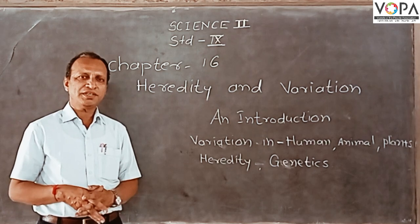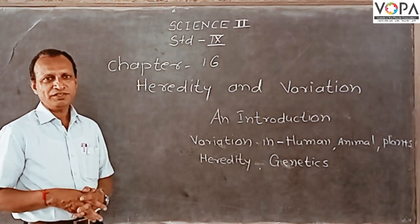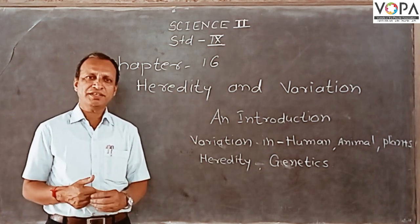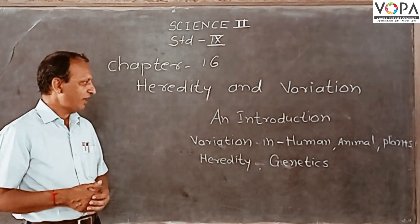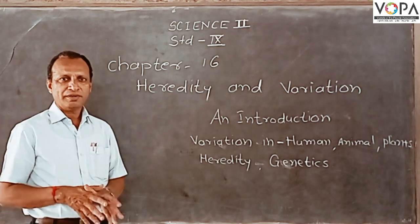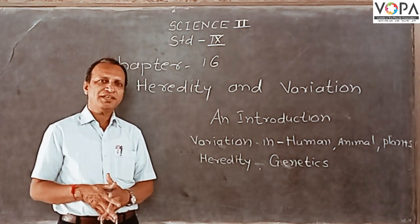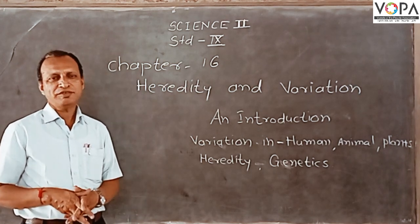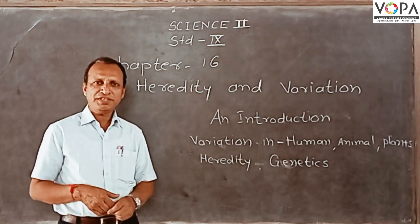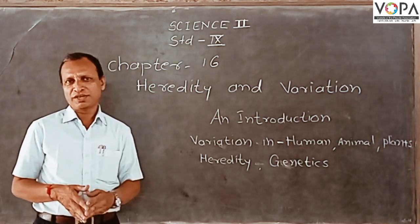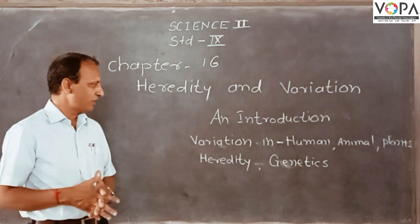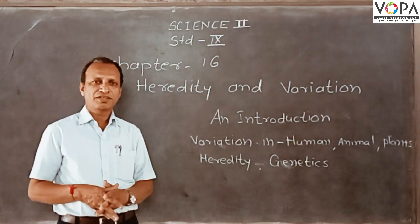How this variation is kept continued by nature is also one of the important questions arising in the mind of children. If we observe the brothers and sisters of the same parents, they have some similarities. These similarities come through heredity. Heredity is the transfer of characteristics from one generation to the next. This heredity brings both similarities and differences.